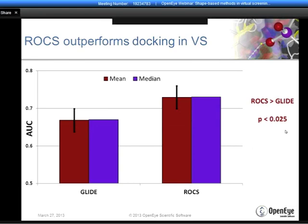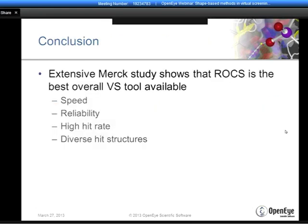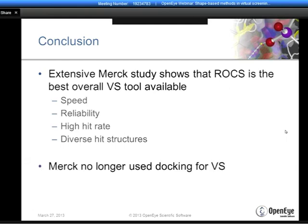What came out of the Merck study was that when the authors compared all techniques for four different success criteria—speed, reliability in terms of minimal inter-target variability, high hit rate or enrichment, and diversity in the structures—ROCS turned out to be the best technique fulfilling all of these different criteria. As a result, Merck, particularly Merck in Canada, ceased to use docking for virtual screening, relegating docking to a post-prediction tool, and turned to ligand-centric techniques—both 2D and 3D methods—for their day-to-day virtual screening studies.